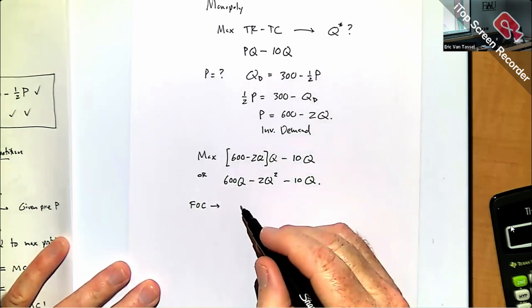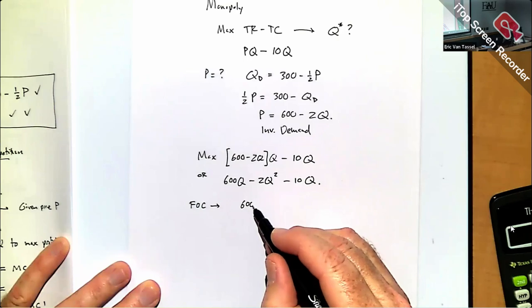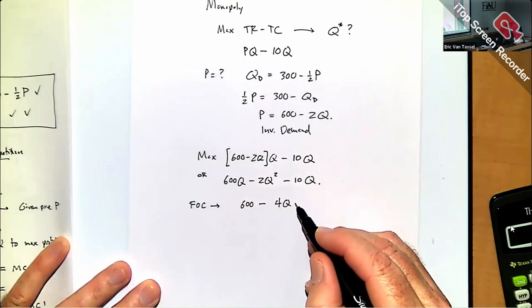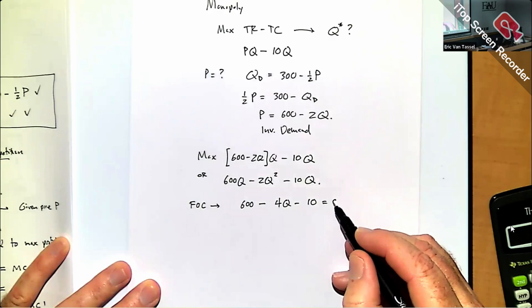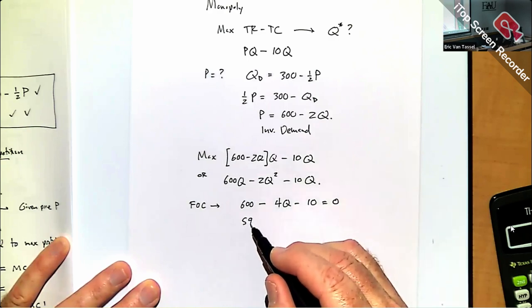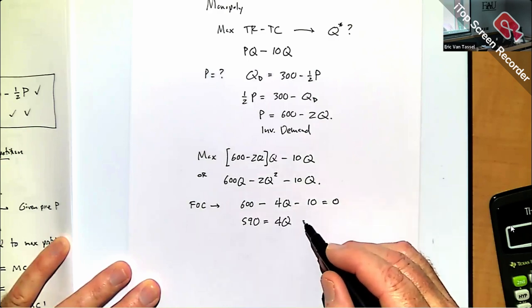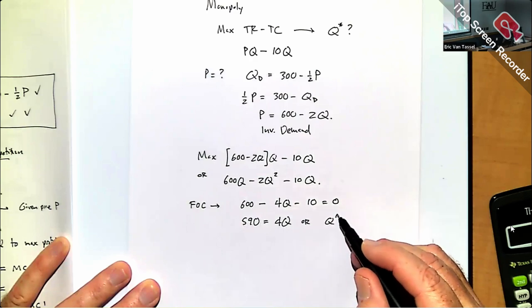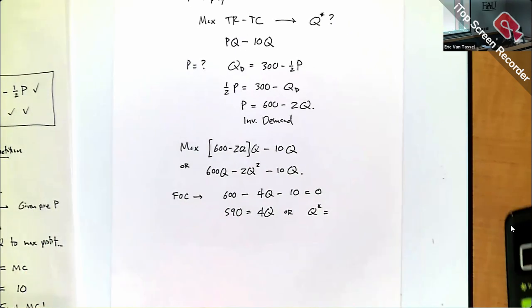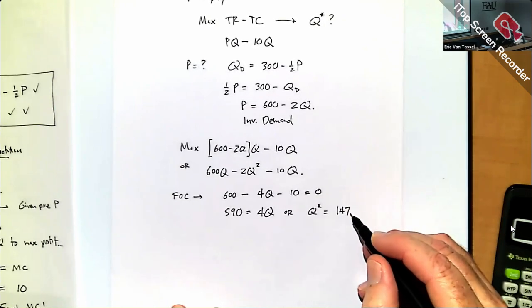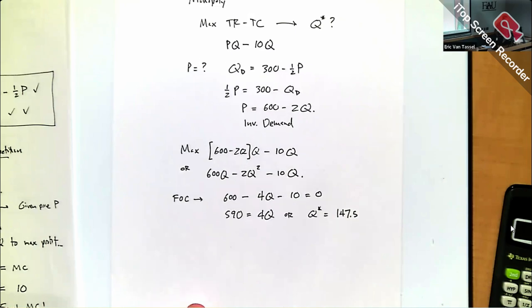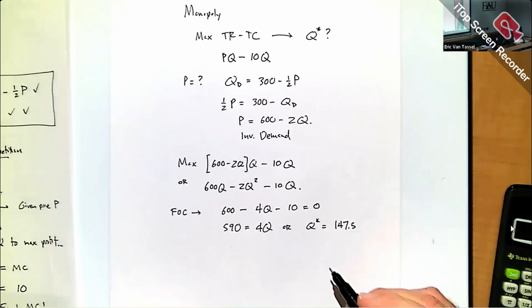To maximize profit, I take the derivative and set it equal to zero: 600 − 4Q − 10 = 0, so 590 = 4Q, giving Q* = 147.5. That's the profit-maximizing output choice for the monopolist.